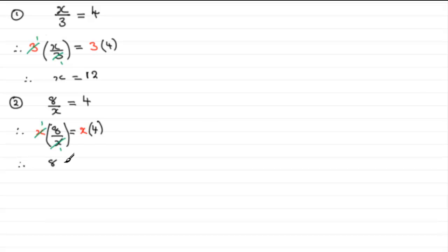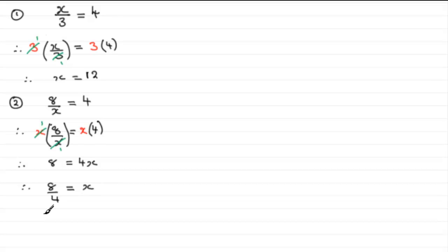So we have 8 equals 4x. Dividing both sides by 4 gives x equals 2. It took a while to reach an answer we knew at the start, but the point is the method.